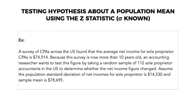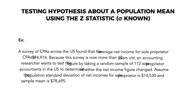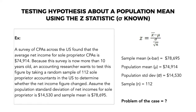Let us have this example to test the hypothesis about a population mean using the Z statistic with population standard deviation known. A survey of CPAs across the U.S. found that the average net income for sole proprietor CPAs is $74,914. Because this survey is more than 10 years old, an accounting researcher wants to test this figure by taking a random sample of 112 sole proprietor accountants in the U.S. to determine whether the net income figure changed. Assume the population standard deviation of net incomes for sole proprietors is $14,530, and the sample mean is $78,695. On the right side, you will see the Z score formula, which is X-bar minus the population mean, all over the population standard deviation divided by the square root of N.